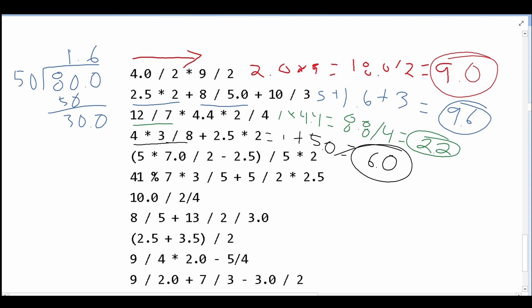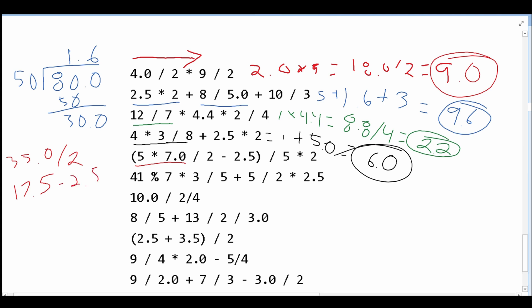In this next part, we have parentheses, so we have to look at everything inside first. We have 5 times 7.0, which gives us 35.0. This is divided by 2, giving us 17.5. Then we subtract 2.5, which gives us 15.0. We divide that by 5, giving us 3.0, and multiply by 2, giving us 6.0 as our final answer.